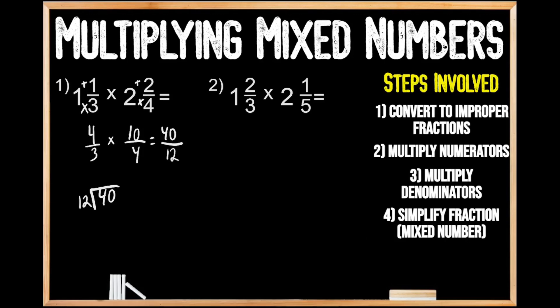We can't make a group of 12 out of 4, so moving left to right we see if we can make a group of 12 out of 40. We can — we can actually make 3 whole groups of 12 out of 40. So we write 3 above the 0, then multiply: 3 times 12 gives us 36. Next we subtract: 40 minus 36 leaves us with 4. We don't have any numbers to bring down, so we're done. We have a remainder of 4, which we record as R4.